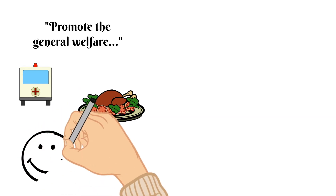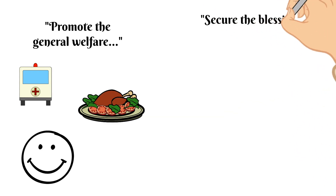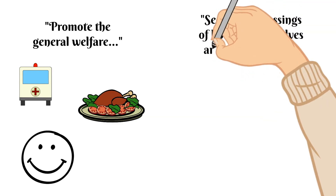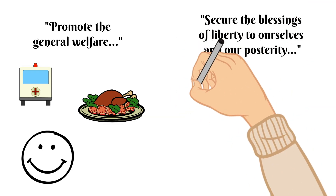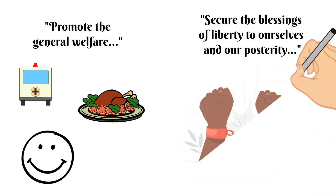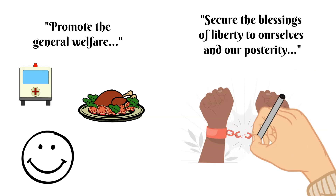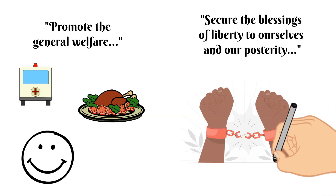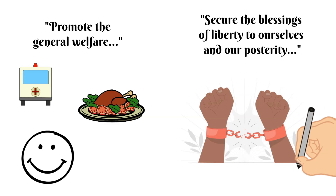And then it says 'secure the blessings of liberty to ourselves and our posterity.' We have to remember that many of the people who traveled to America came from countries where they had very little freedom, both politically and religiously. This phrase demonstrates the intent that the new government was going to protect this freedom against any other government — the blessings of liberty for ourselves and for our children.